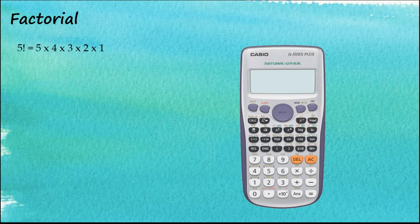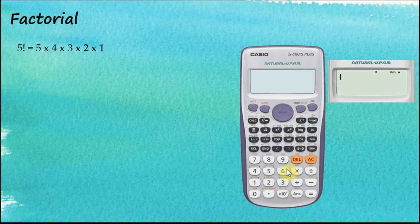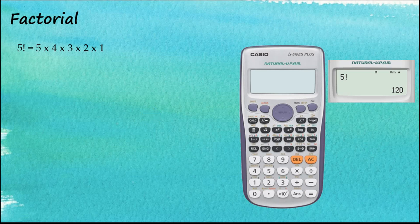Let's switch on the calculator, tap 5, then press Shift and the factorial button, then press equal. The result is 120. That's how we find the factorial of a number — it's straightforward.